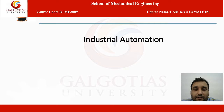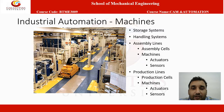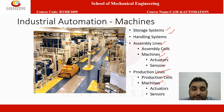Industrial automation, as the name suggests, is the integration of our production system and computer applications. Industrial automation includes the machine, storage system, handling system, assembly lines — which include assembly cells and machines having sensors and actuators — and production lines, which include production cells and again machines with actuators and sensors. These are the components of industrial automation.